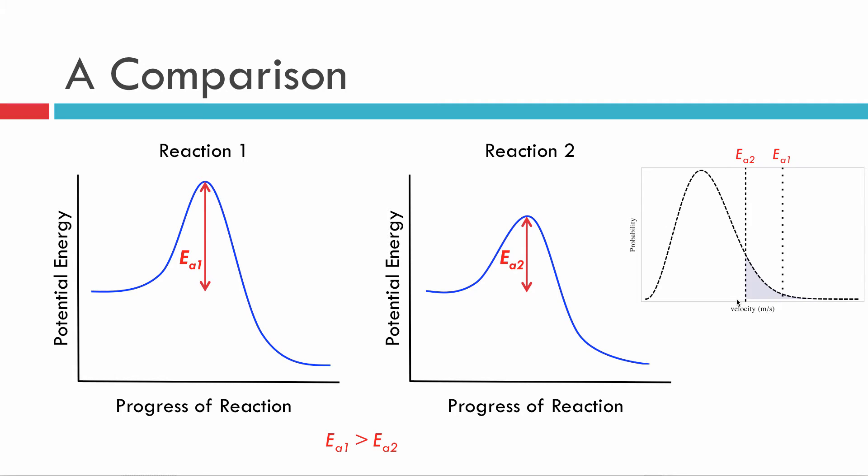And you can see right away that when this larger activation energy—less molecules are to the right of it. Less molecules have this average velocity necessary for going over and meeting that criteria of having enough energy to get over the activation energy.